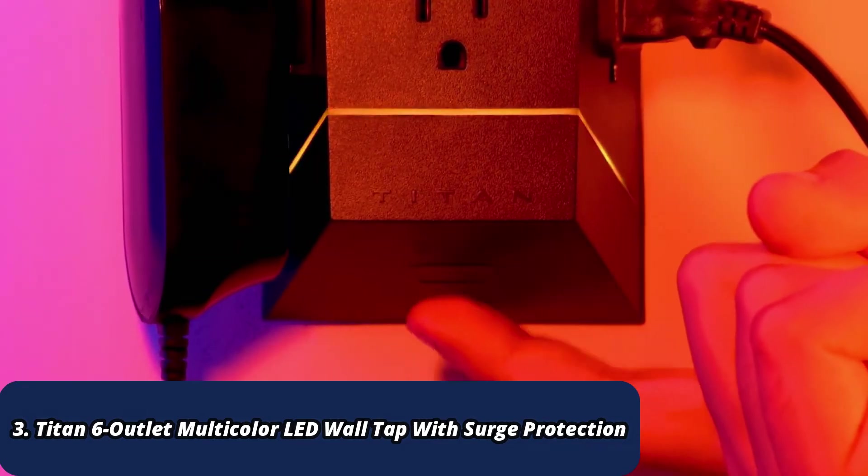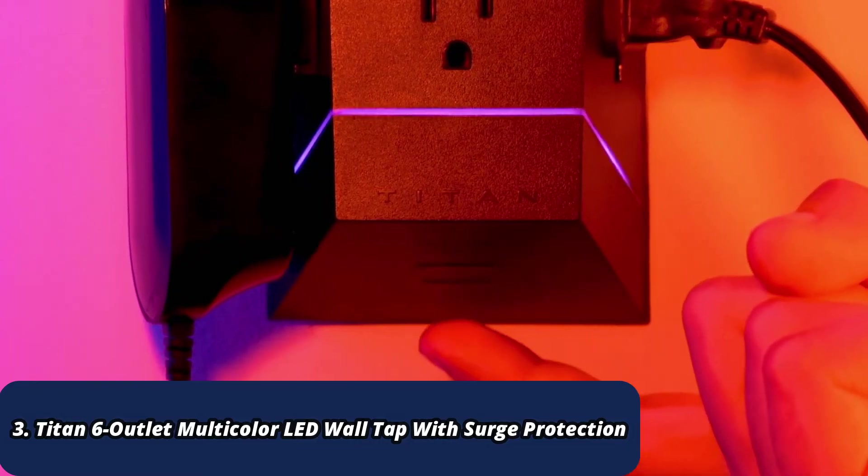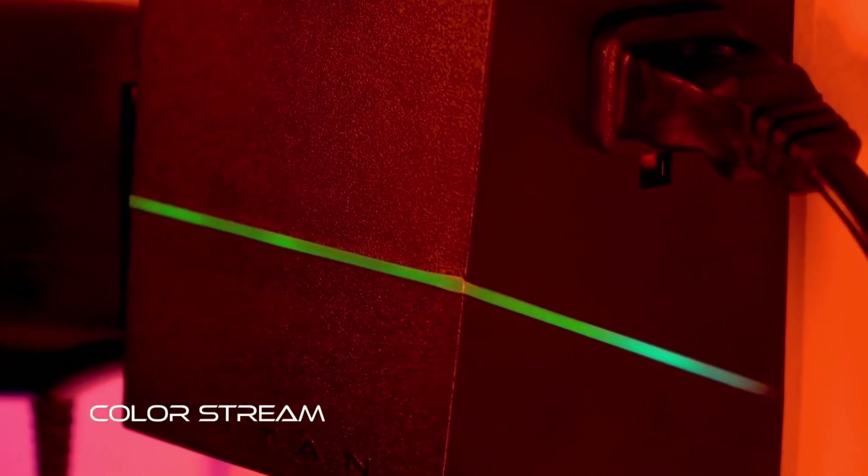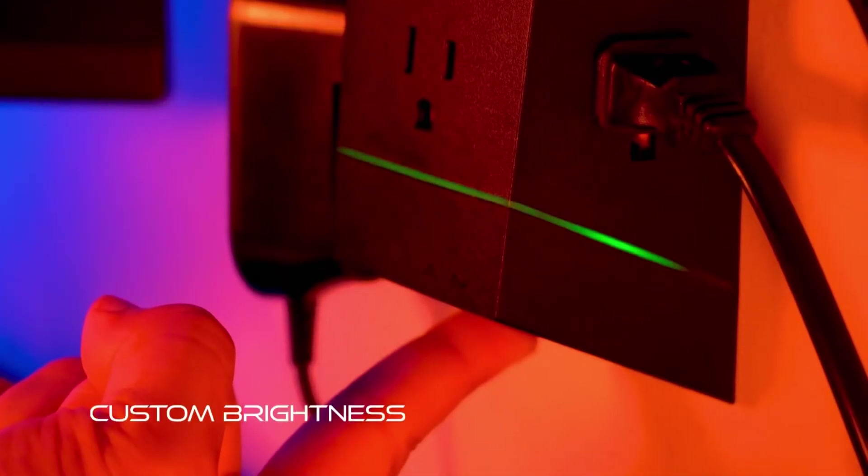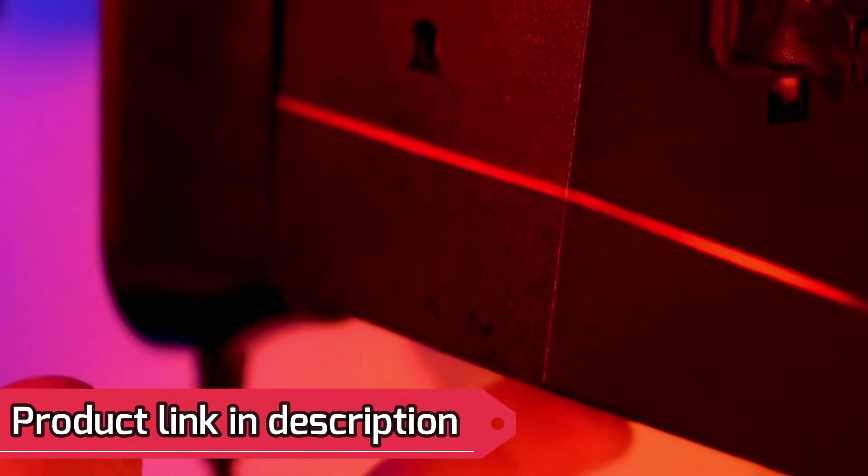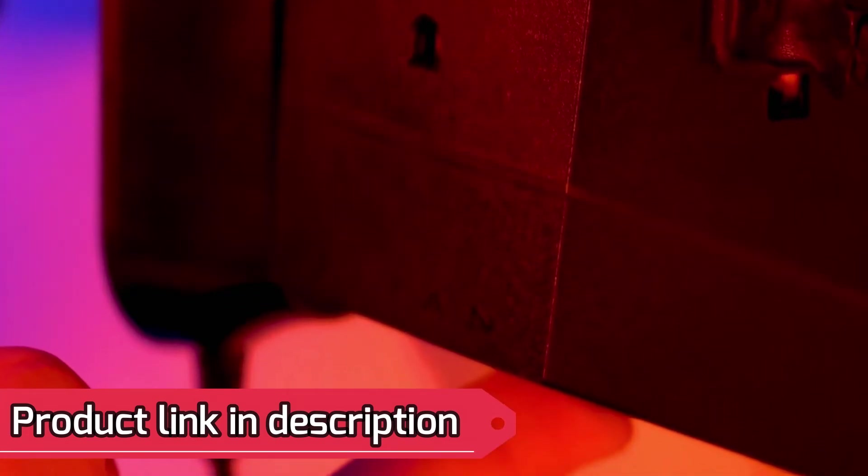Experience a full spectrum of color with a simple touch. Switch between four levels of brightness by briefly holding the button and easily turn off the LEDs by holding it for two full seconds.